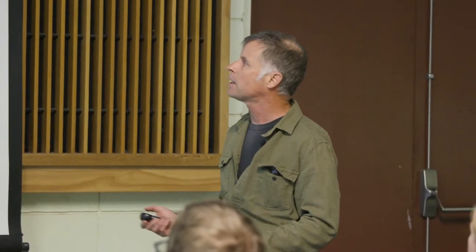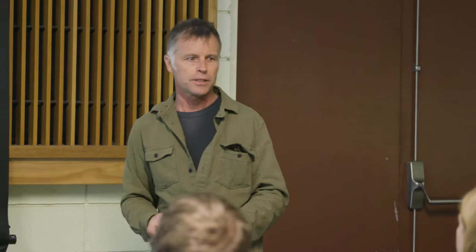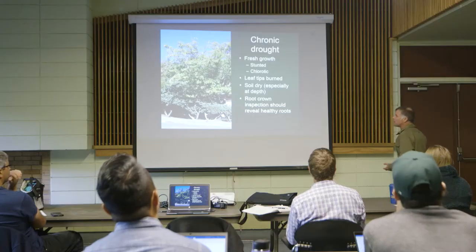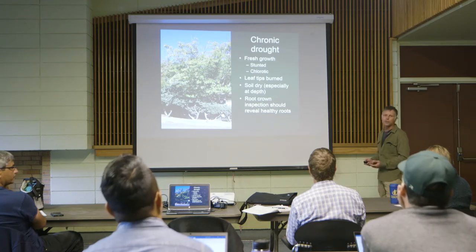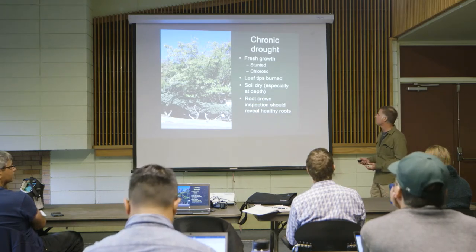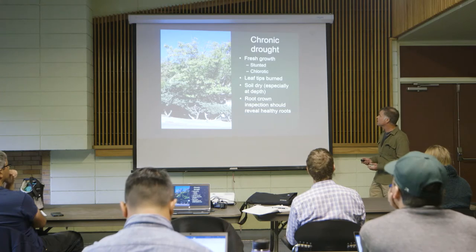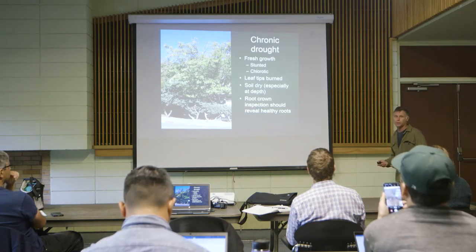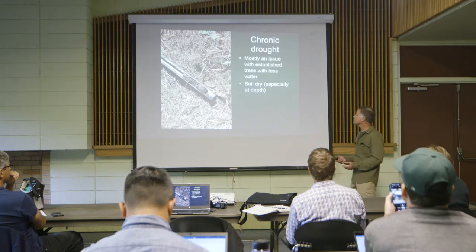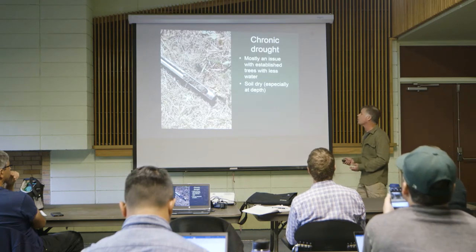That's not going to happen on an annual plant — annual plants don't run deficits because they're dead by the end of the first year. So chronic drought is only really going to happen on larger trees. Even in chronic drought, root crown inspection should reveal healthy roots in a perfect world.